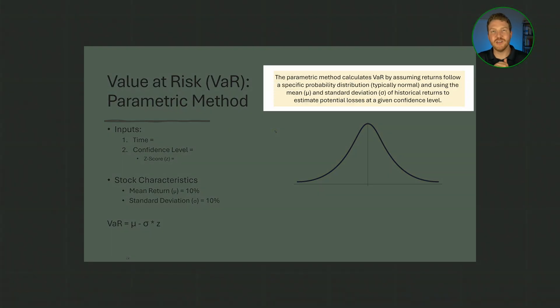The parametric method calculates VaR by assuming that returns follow a specific probability distribution, typically normal, and using the mean and standard deviation of historical returns to estimate potential losses at a given confidence level. We could take into account skewness and kurtosis, but that's beyond the scope of this video.